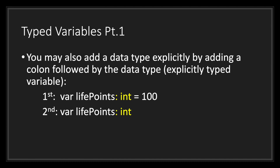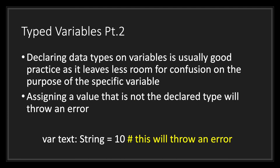In the first example, we have a variable called life_points, and using the colon symbol followed by the int keyword, we are saying that our variable called life_points can only have integer values assigned to it. Declaring data types on variables is usually considered good practice, as it leaves less room for confusion. Assigning a value that is not the declared type will throw an error.